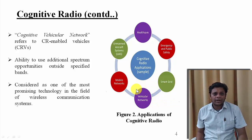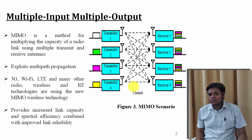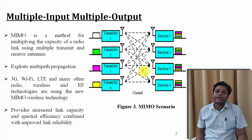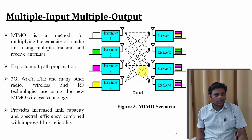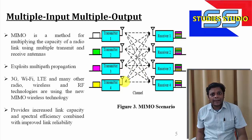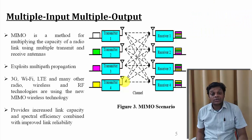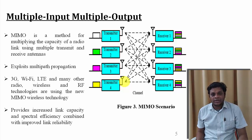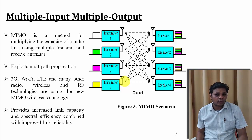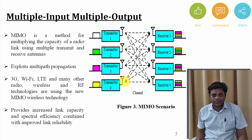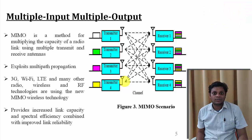What is multiple input and multiple output? It is a method of multiplying the capacity of a radio link using multiple transmit and receiving antennas. For example, suppose our laptop is connected with an Ethernet — a wired LAN connection. At a time, using an Ethernet wire, one laptop can be connected to the internet. However, using this MIMO technique and through various applications like Connectify, we can create a wireless environment and connect various mobile phones, laptops, or any networking device to get the internet connection in a wireless mode.